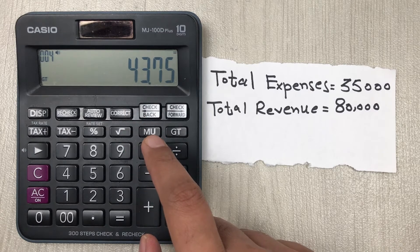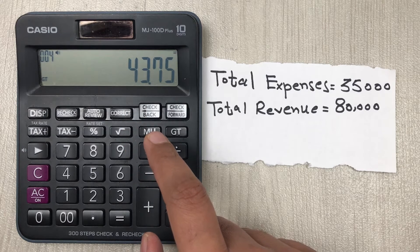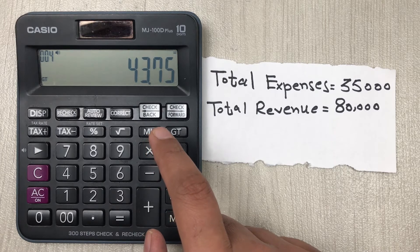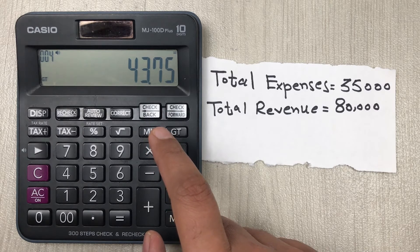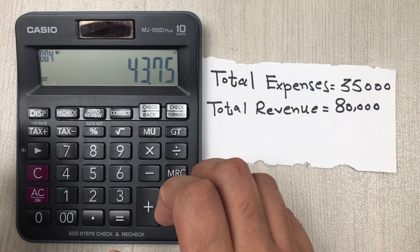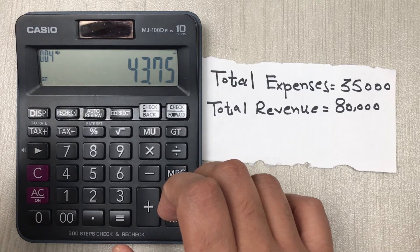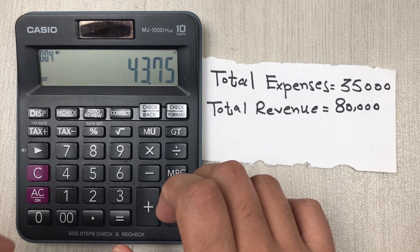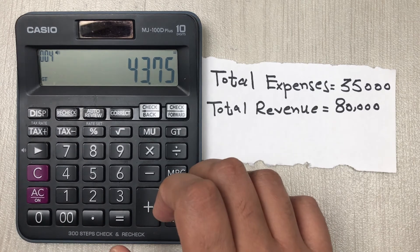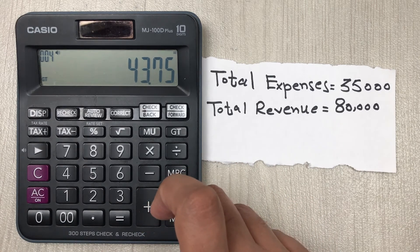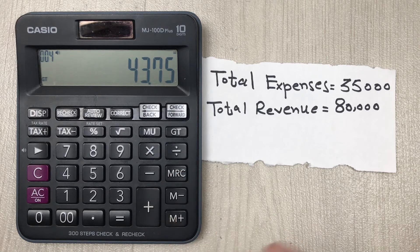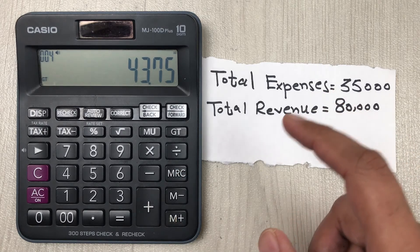This is how you can calculate the percentage of sales to expenses on your calculator. You just have to remember the formula: total expenses divided by total revenue, multiply by 100.